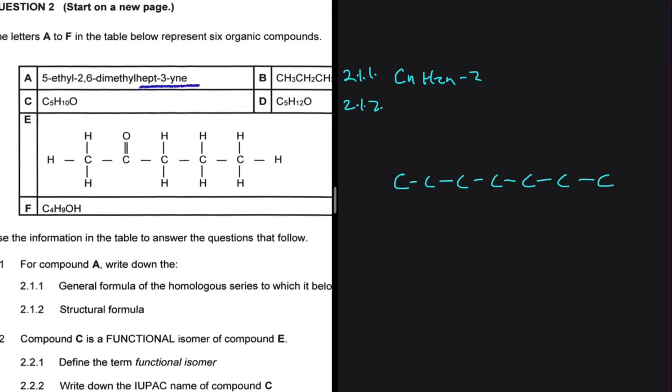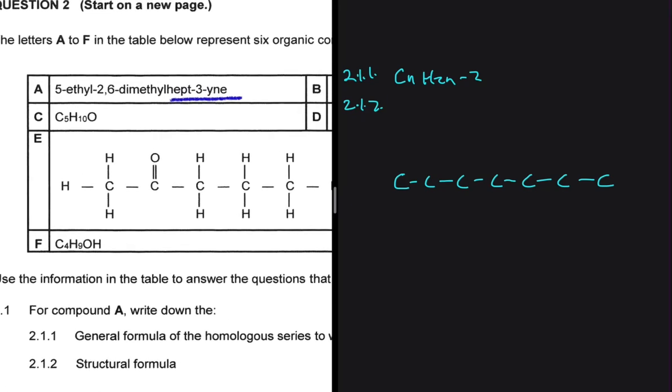And then it is hept-3-yne. So on the third carbon, we need a triple bond. So if we start counting from the left, we're going to have 1, 2, 3. And there we go. We have our triple bond.